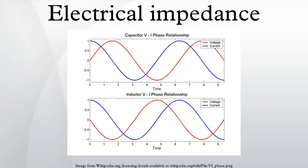Variable impedance: in general, neither impedance nor admittance can be time varying, as they are defined for complex exponentials. If the complex exponential voltage-to-current ratio changes over time or amplitude, the circuit element cannot be described using the frequency domain. However, many systems may exhibit non-linear or time-varying voltage-to-current ratios that appear to be linear time-invariant for small signals over small observation windows. Hence, they can be roughly described as having a time-varying impedance — though this description is an approximation. Over large signal swings or observation windows, the voltage-to-current relationship is non-LTI and cannot be described by impedance.